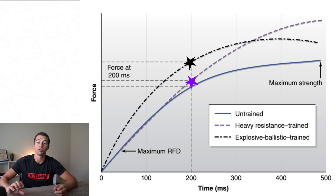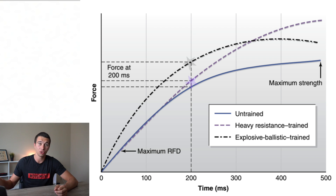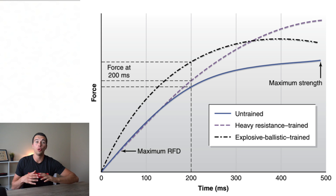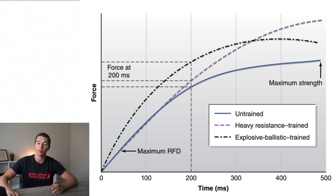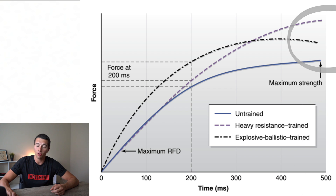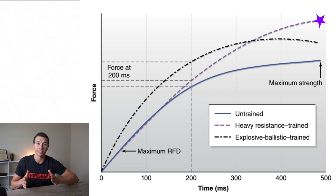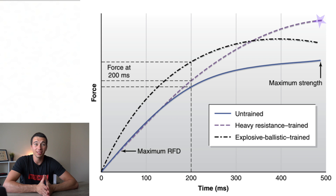Because the basketball player can produce more force in that short 0.2-second window, he's going to achieve a higher box jump. Now let's consider a 1RM squat, where it takes two to three seconds to get out of the hole. Looking at the max force portion of the graph, we can see that the powerlifter-trained athlete is going to have higher force when he has the full half-second or more to produce it.